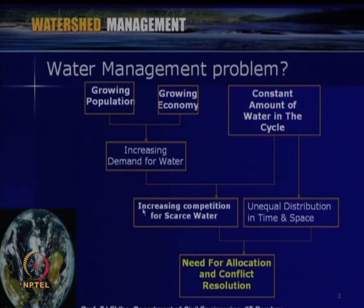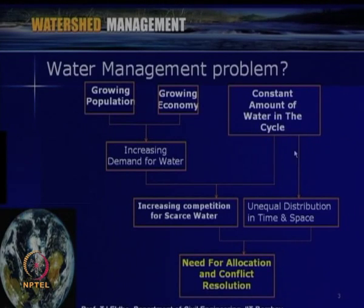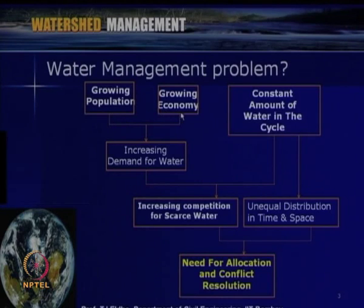The goal is optimal utilization and better watershed management. Water management is a big problem, either at watershed or river basin scale, due to reasons like growing population, growing economy, and various ecological needs. As discussed in previous lectures, the amount of water in the water cycle is almost constant. To meet increasing demands due to growing population, developmental activities, and a growing economy, there is increasing competition for the scarce available water.